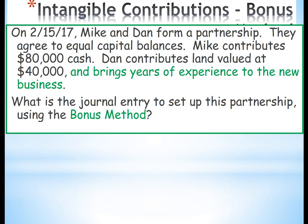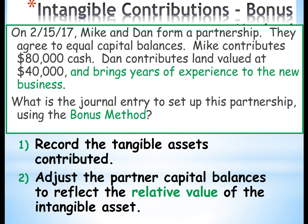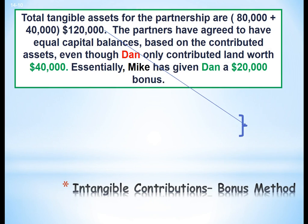On 2015-17, Mike and Dan form a partnership and agree to equal capital balances. Mike contributes $80,000 and Dan contributes land valued at $40,000 and brings years of experience to the new business. Using the bonus method, we first record the tangible assets — cash and the fair value of the land. Total tangible assets are $80,000 plus $40,000 equals $120,000. Since the partners agreed to equal capital balances, Mike has effectively given Dan a $20,000 bonus.